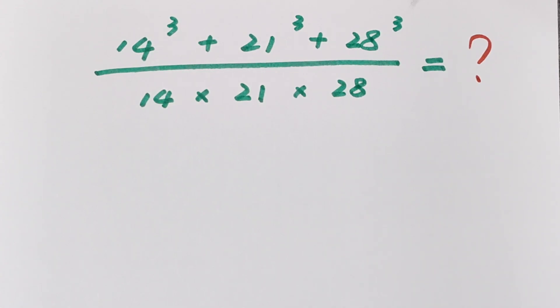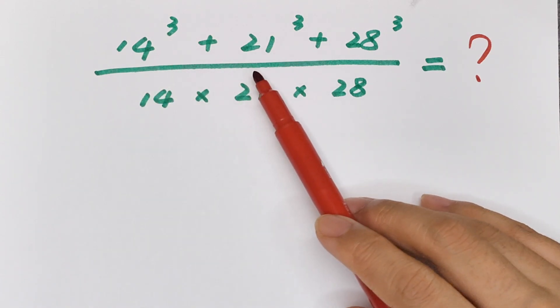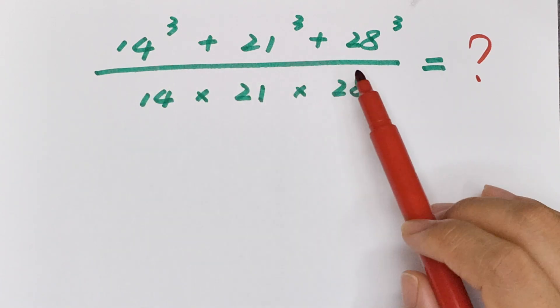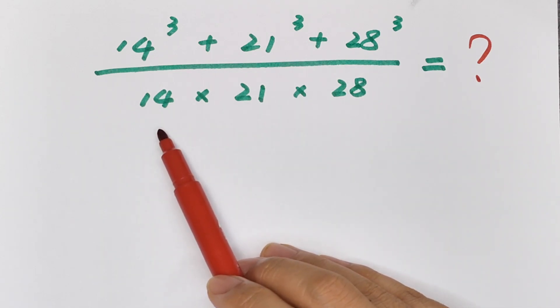Hello everyone, welcome to Math4U. How to solve 14³ + 21³ + 28³ divided by 14 × 21 × 28?